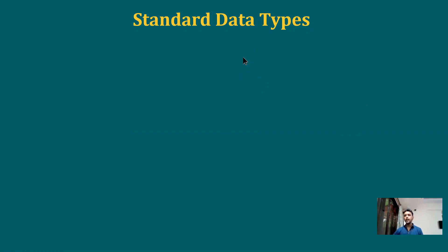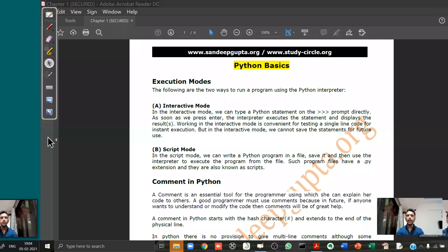The next important concept is standard data types. Pay good attention here because you may be surprised. Before proceeding, can you give an example of a data type from C or Java? The most frequently used ones are int, float, double. In Python, there is no concept of explicitly declaring a data type.